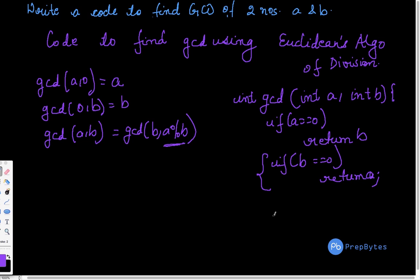What we have to write is we have to return GCD, we have to use this particular formula B, A mod B. So this particular code gives me the GCD.